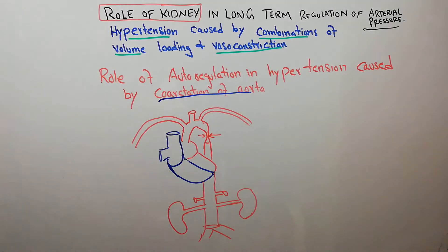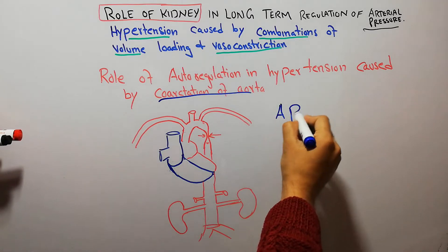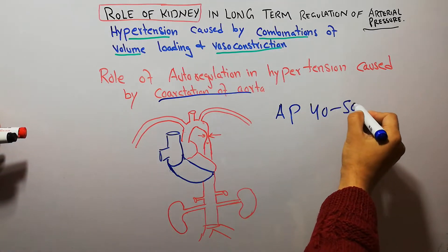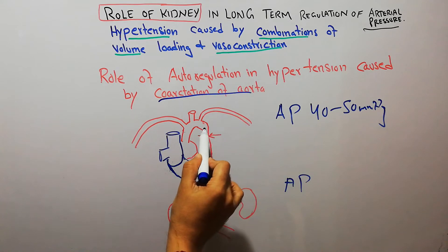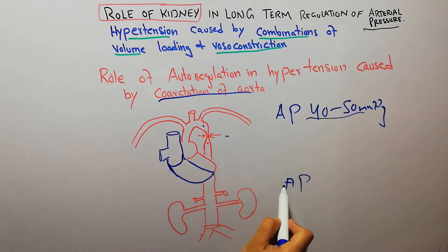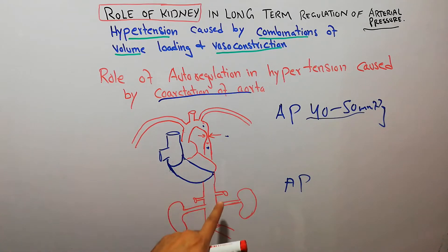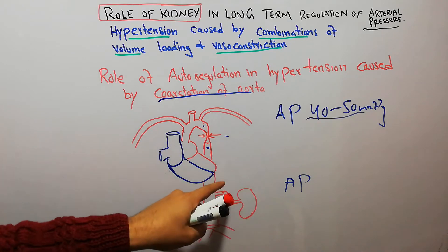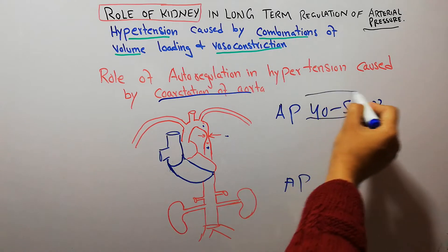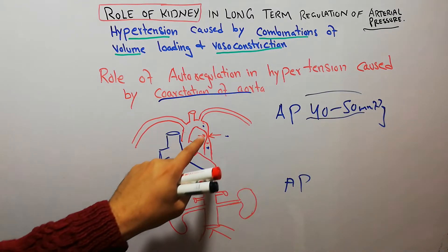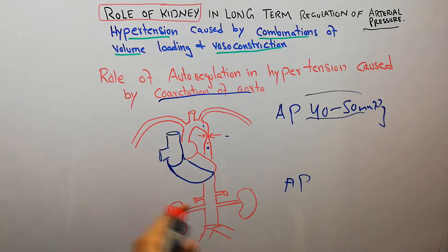Whenever there is narrowing of the aorta, the arterial pressure in the upper extremities is 40-50 mmHg higher than arterial pressure in the lower extremities — or the arterial pressure in blood vessels proximal to this point is higher than in blood vessels distal to this point. Due to low blood flow to the kidneys, there is a release of renin which leads to formation of angiotensin, release of aldosterone, and increased arterial pressure in the blood vessels proximal to the point of constriction, which pushes more blood into the kidneys and normalizes blood flow to the kidneys.